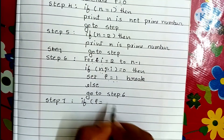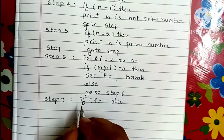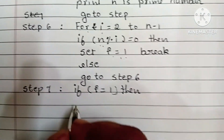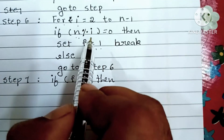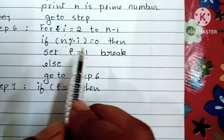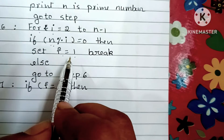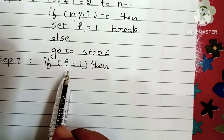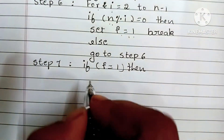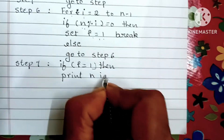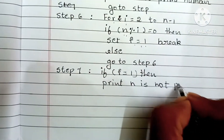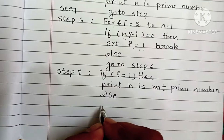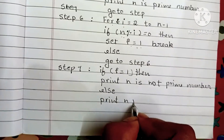Step 7: if F is equal to 1, it means the given number is not prime — because N was completely divisible by some I — so we print N is not a prime number. Else, we print N is a prime number.